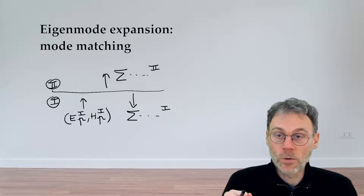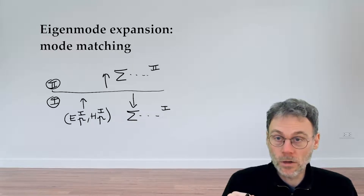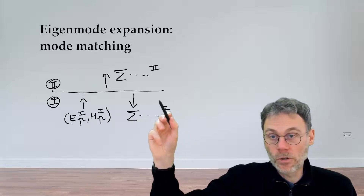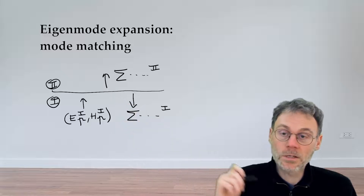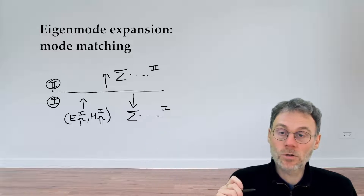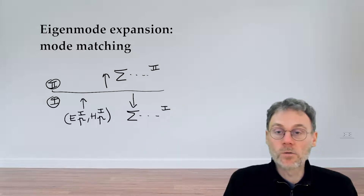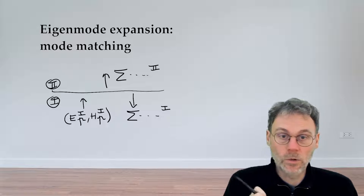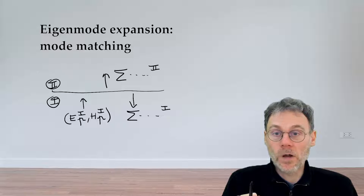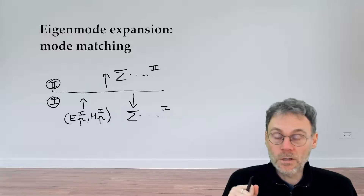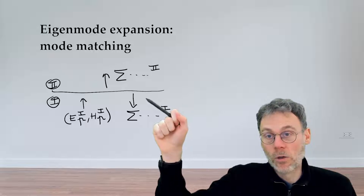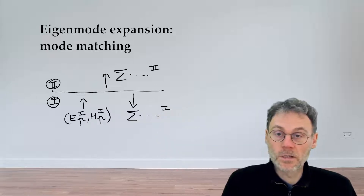Mode matching basically exploits the continuity equations of Maxwell. Maxwell tells us that the tangential component of the electric field is continuous across the boundary, and the same is true for the tangential part of the magnetic field H across the boundary — at least in situations where there's no current, which is what we're looking at. So pause the video and write down that both the electric and magnetic fields are continuous in their tangential components on both sides of this interface.